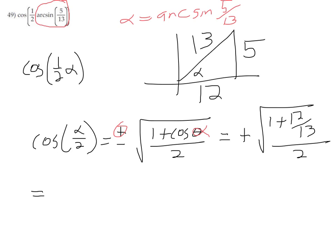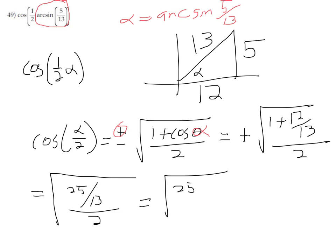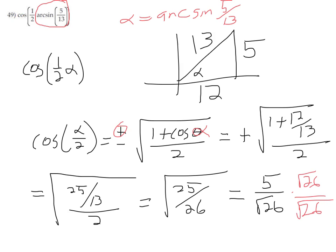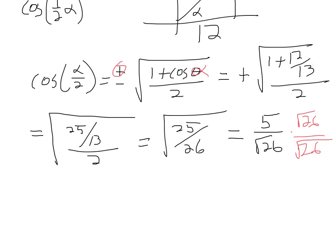The numerator is 12 thirteenths plus 1, which is 25 thirteenths. Dividing by 2 gives square root of 25 over 26. The numerator reduces to just 5. Then we multiply by square root 26 over square root 26 to get our final answer: 5 square root 26 over 26.